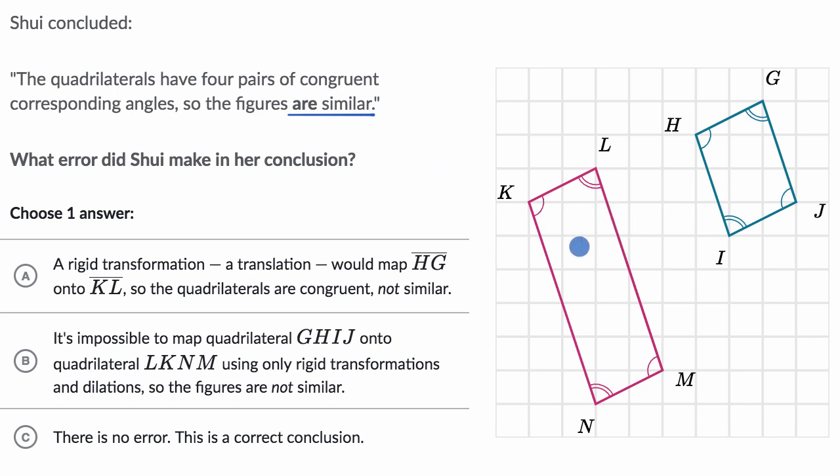Now, when I look at these two figures, you could try to do something. You could say, okay, let me shift it so that K gets mapped onto H. And if you did that, it looks like L would get mapped onto G. But these sides KN and LM right over here, they seem a good bit longer.